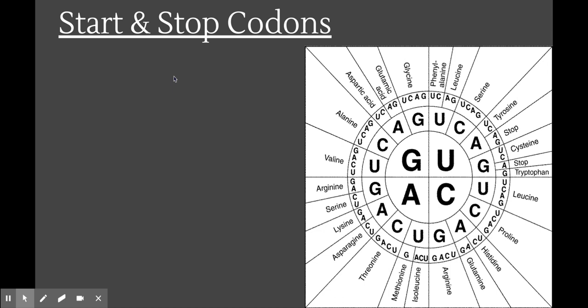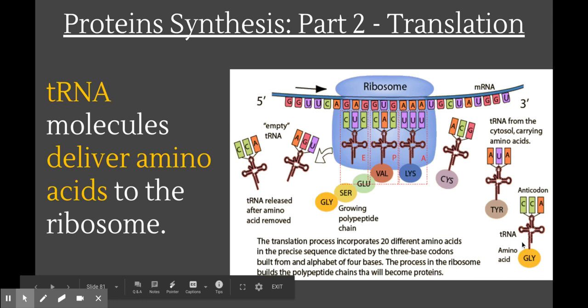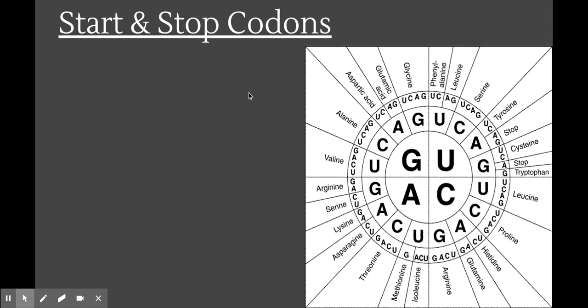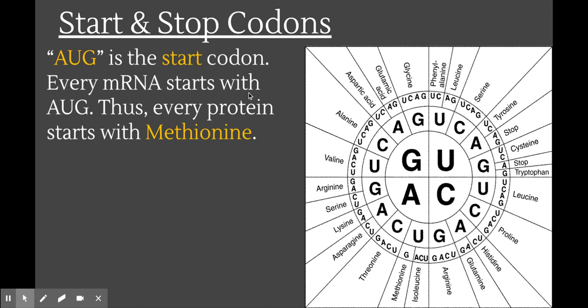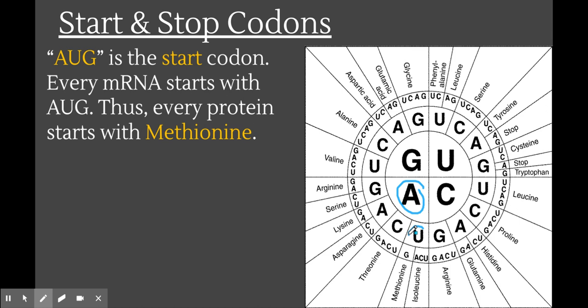The ribosome takes the amino acid from the tRNA and adds it to the growing chain. Eventually, it will have made a chain of all the amino acids in the protein, and that amino acid chain will separate from the ribosome — that chain becomes the protein. You might wonder how the ribosome knows where to start and stop. It turns out there are chemical signals for that. There's a start codon that every single mRNA sequence starts with, and that is AUG — the same one we broke down just a moment ago. Every single protein starts with a methionine amino acid.